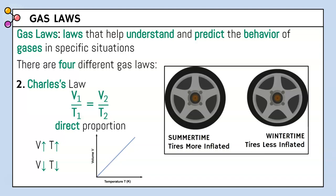Looking at car tires in the summertime: temperature is really high, so the tires get bigger — that's why you may need to let air out of your tires, because when temperature goes up, volume goes up. In wintertime, temperature is cold so the tires get smaller, and you may need to add more air.